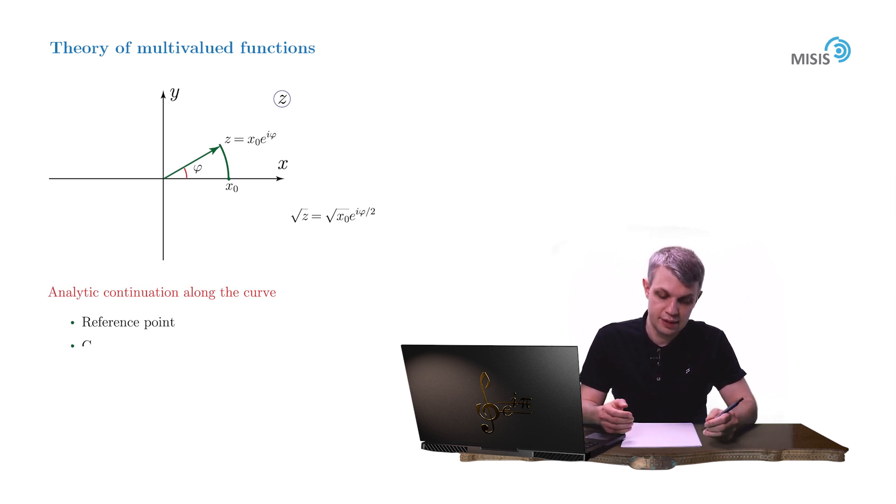The initial point or reference point x₀, the contour, in our case a part of a circle, and the function itself, the square root.